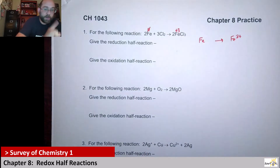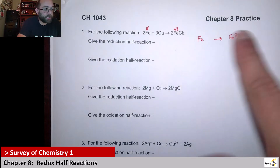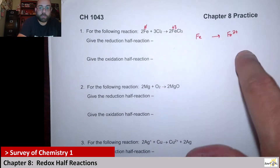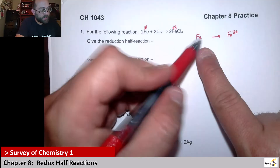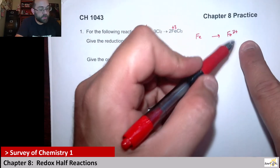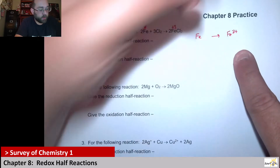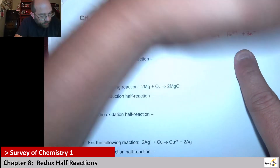You always want to balance the charge. So I've got to add electrons here. Which side would I add electrons to in order to balance the charge? In this case, this is zero and this is plus three. So on the positive side, I've got to add those electrons — I'd add the three electrons here.